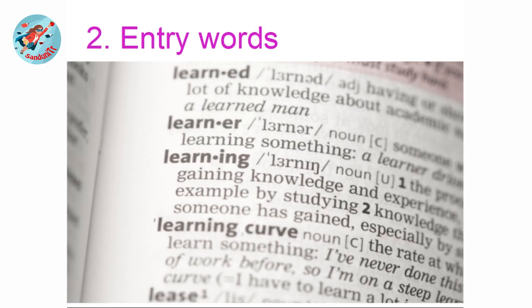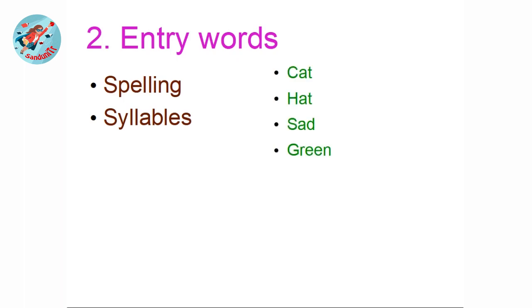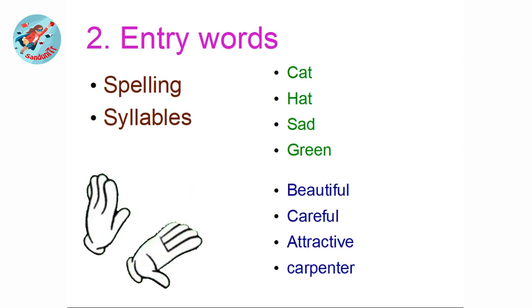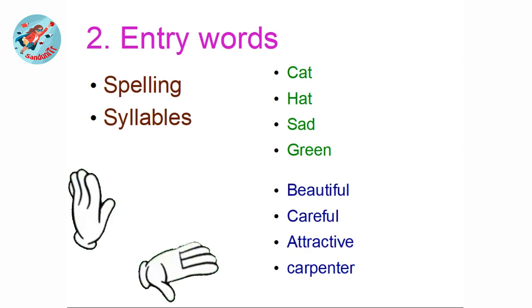In spelling, you can use syllables for a word. Let's practice identifying syllables. For example: cat, hat, fat, green. Now let's clap out syllables: beautiful, careful, attractive, carpenter — clap for each syllable as you say the word.